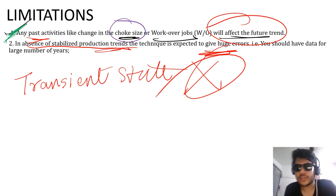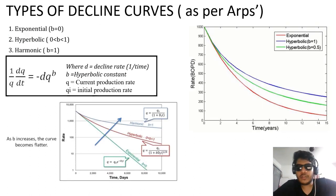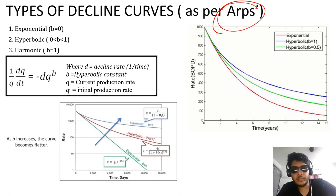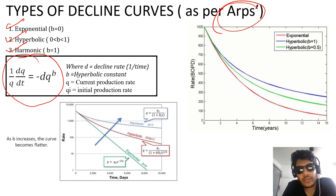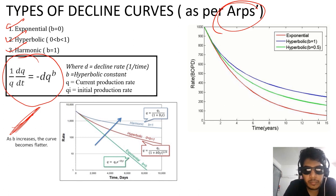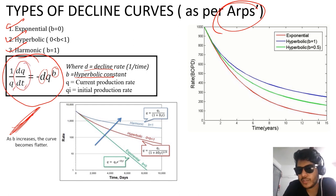Coming to the types of Decline Curve Analysis: I will be discussing the concept given by Arps. According to him there are three decline curves possible — exponential, hyperbolic, and harmonic. This is a very important equation; based on this equation Arps gave the entire theory. The variables are: minus d shows the decline rate, small b shows the hyperbolic constant, q is the production rate, and dq/dt means differentiated with respect to time.